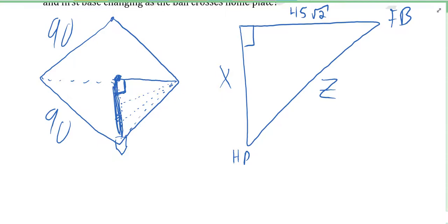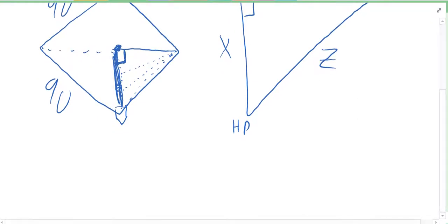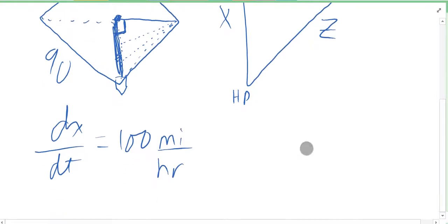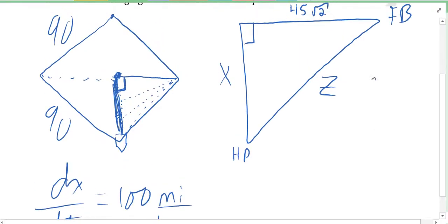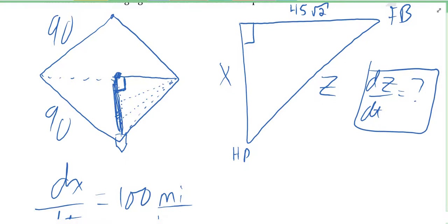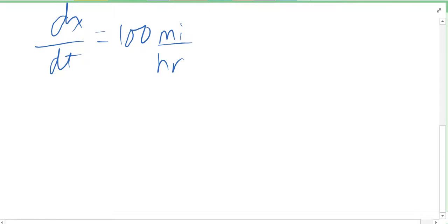We know how fast x is changing. We just said dx/dt is 100 miles an hour, which we're going to have to change. We want to know what dz/dt is - that's the big question here, that's our goal. We need an equation that links x to z, and that is going to be the Pythagorean theorem. We know that x squared plus 45 root 2 squared has to equal z squared. No matter where that ball is, that has to be true.